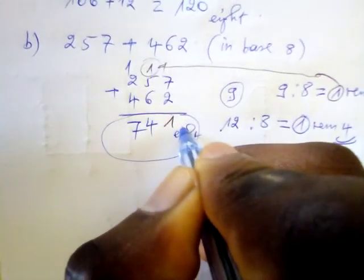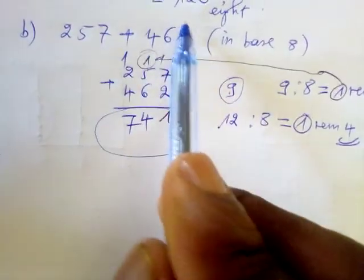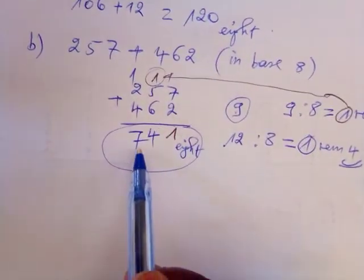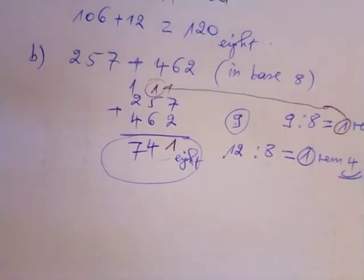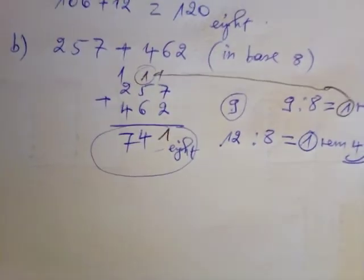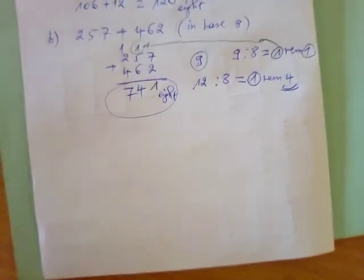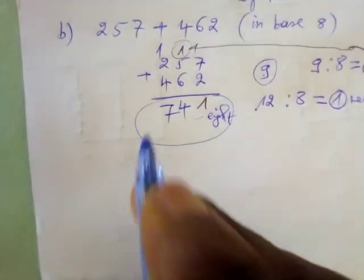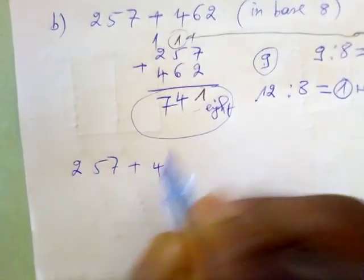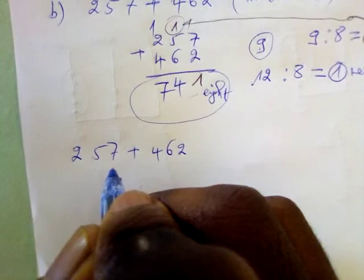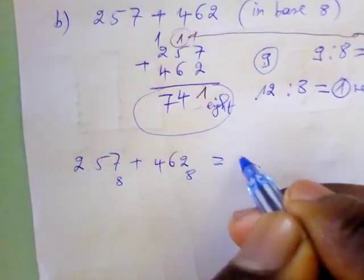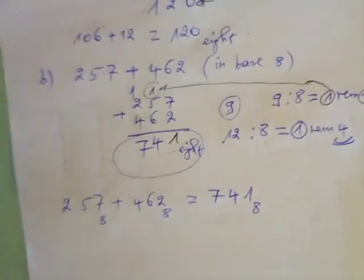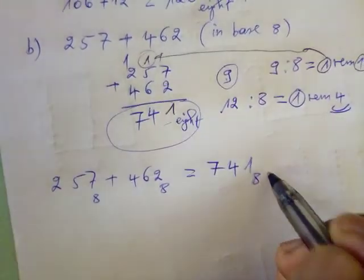Because all these numbers are in base eight and we are adding within base eight, our answer is also in base eight. So 257 plus 462, both in base eight, equals 741 in base eight. That is our solution.